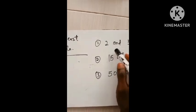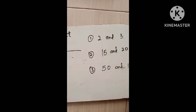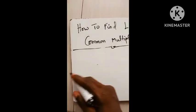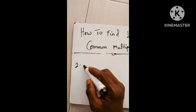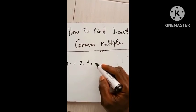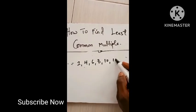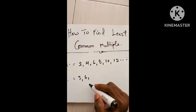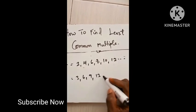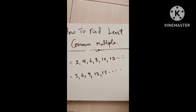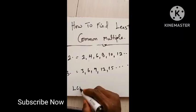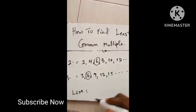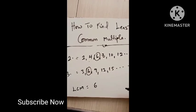Now let's dive into the problems. For the first example, we want to find the least common multiple of two and three using the listing multiples method. The multiples of two are: 2, 4, 6, 8, 10, 12, and so on. The multiples of three are: 3, 6, 9, 12, 15, and so on. So the LCM of two and three is going to be six — very easy and simple.